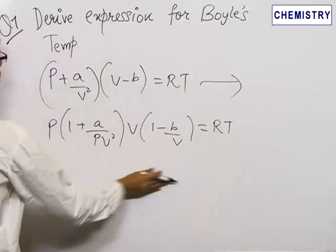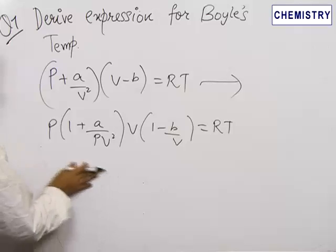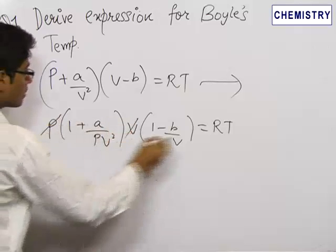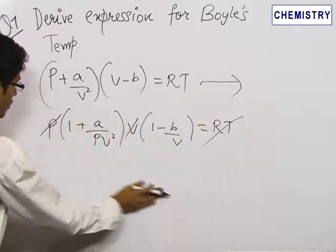Now, since at Boyle's temperature, the real gas behaves as an ideal gas, we get P into V equals RT which we got from the ideal gas equation.